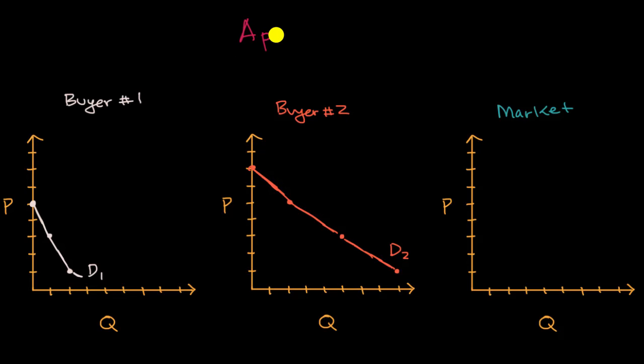In this video, we're going to think about the market for apples. But the more important thing isn't the apples. It's to appreciate that the demand curves for a market are really the sum of the individual demand curves for every member of that market.